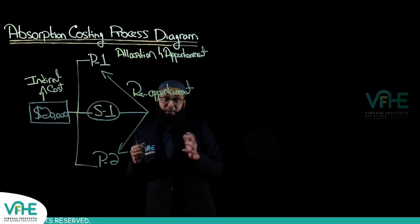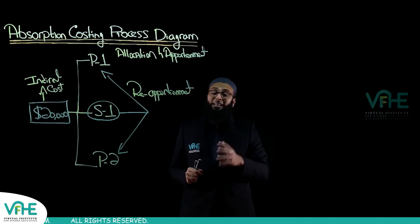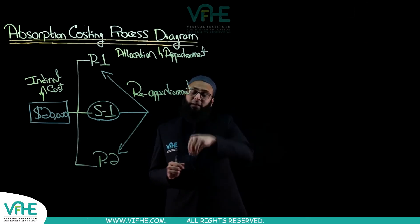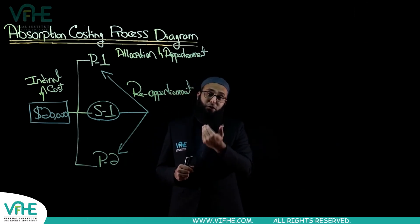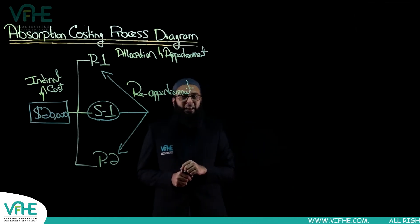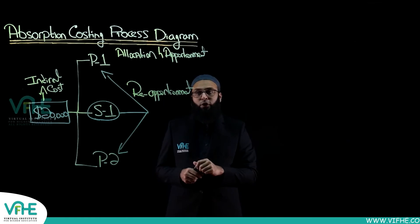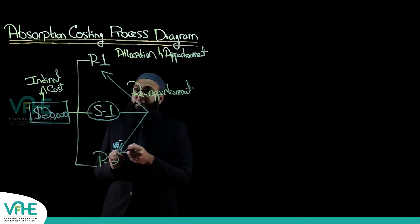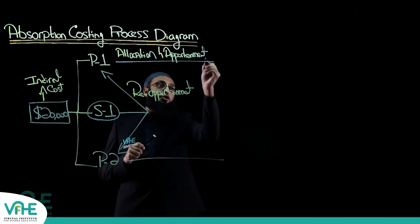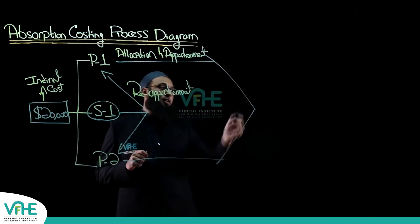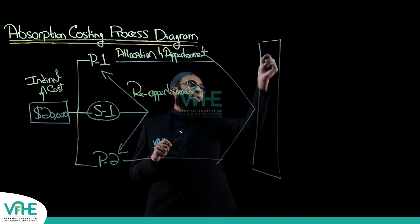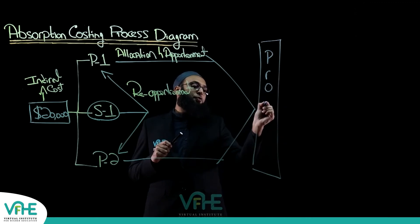Once reapportionment has been done, all the overheads are now in the production departments — production department one and production department two. Then comes the third stage: absorption. All these overheads will now be absorbed into the products, and this is the stage of absorption.